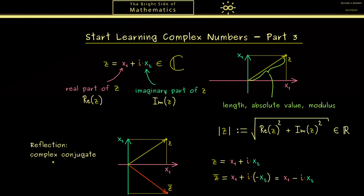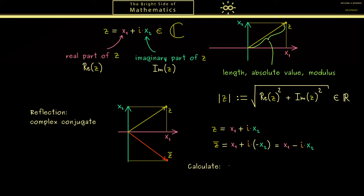Okay so this is the complex conjugate and now you might ask why do we need it? In fact the advantages of the complex conjugate I can immediately show you when we just multiply z with z bar.